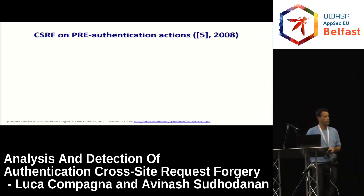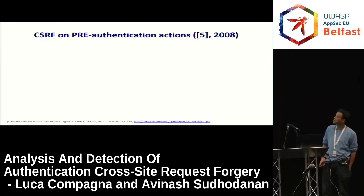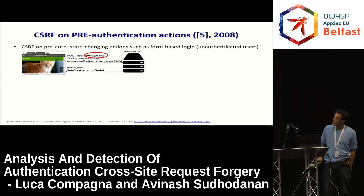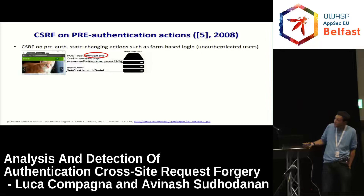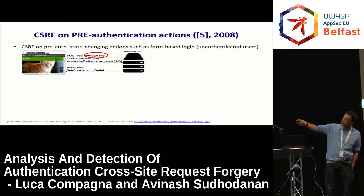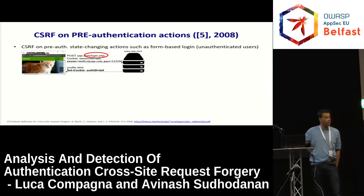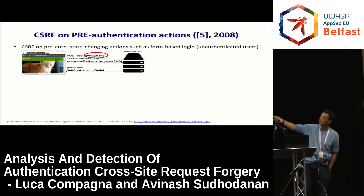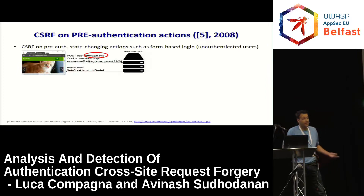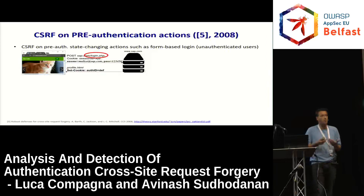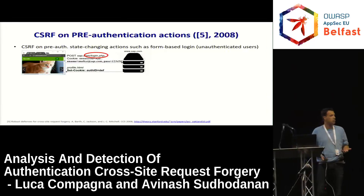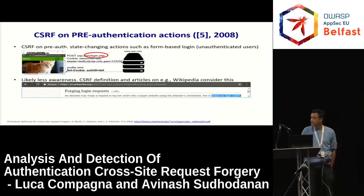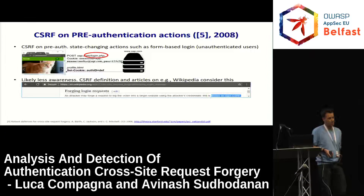The other variant is pre-authentication cross-site request forgery. Here the victim doesn't yet have an authentication context with the website, so the attacker can forge the login request — putting their own credentials there. If the website is not protected, from that point on the victim will be logged into the website under the attacker's identity. The attacker can then track what the victim is doing. As you can imagine, this can be a privacy issue, and it can go beyond privacy — though there's perhaps a bit less awareness about this in the community.